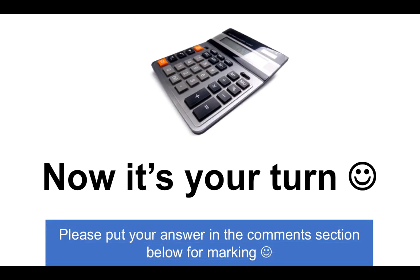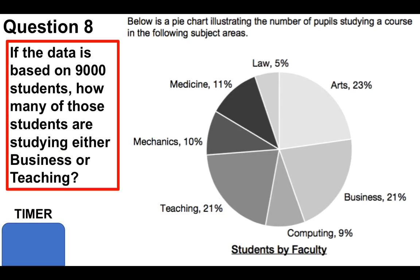Again, now it's your turn. I'm going to give you one very similar to work out yourself. Question number eight: You've got the pie chart illustrating a number of pupils studying courses in the following subject areas. Now, if the data this time is based on 9,000 students, how many of those students are studying either business or teaching? You've got to add those two up and then work out what the percentage is of that total. You've got the time it takes the timer to come down to answer the question in the comments section below, please.